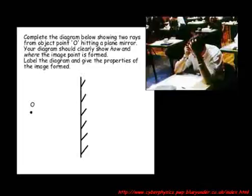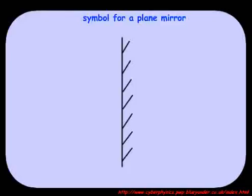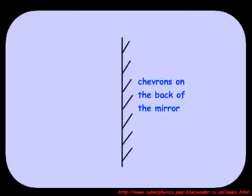First of all, draw the symbol for a plane mirror in the center of your page. Do not overdo the shading at the back of the mirror. The chevrons look best when they are widely spaced and it saves time to draw fewer of them.